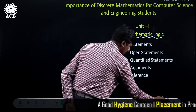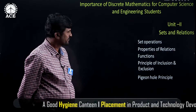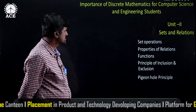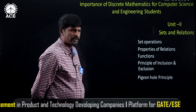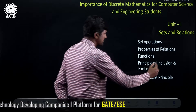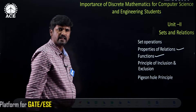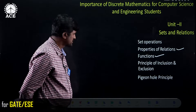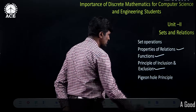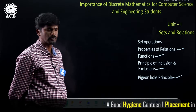The next unit is sets and relations. In this unit, the student is going to study about set operations, relations, and properties of relations. Then they will study about functions and types of functions, and the principle of inclusion and exclusion.